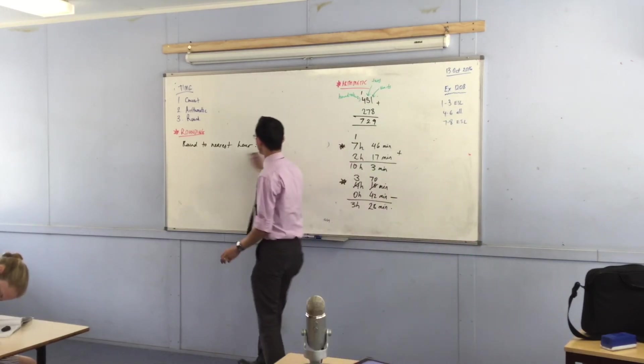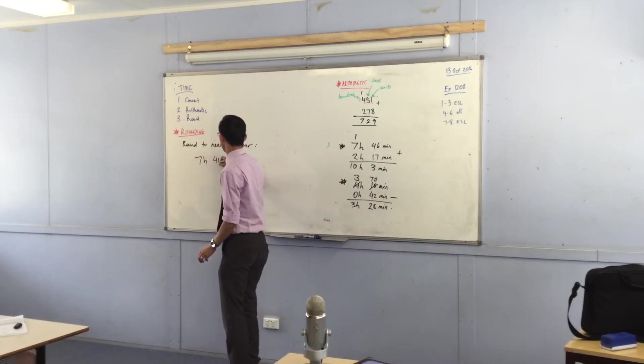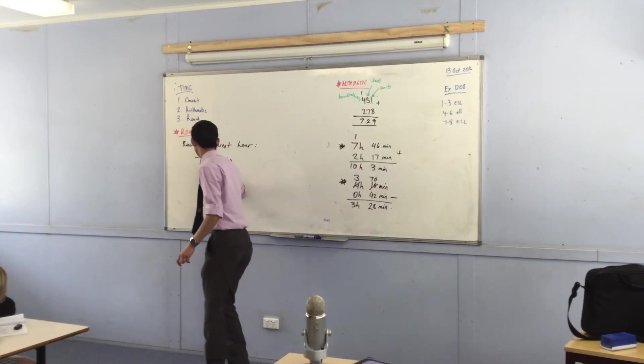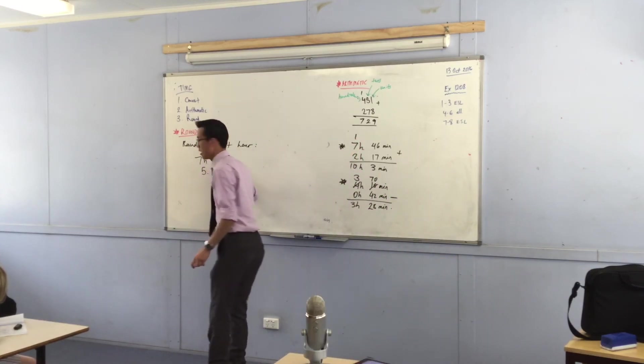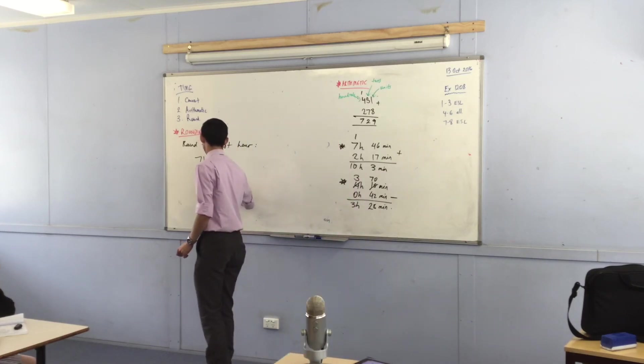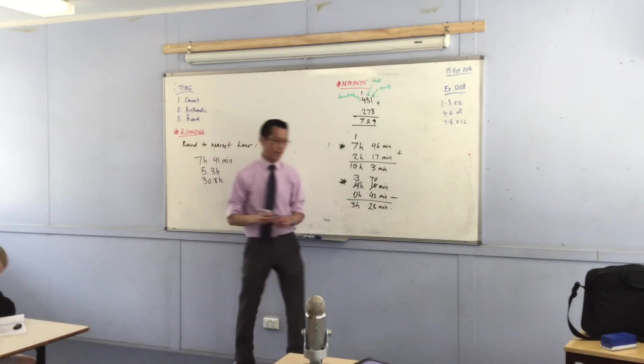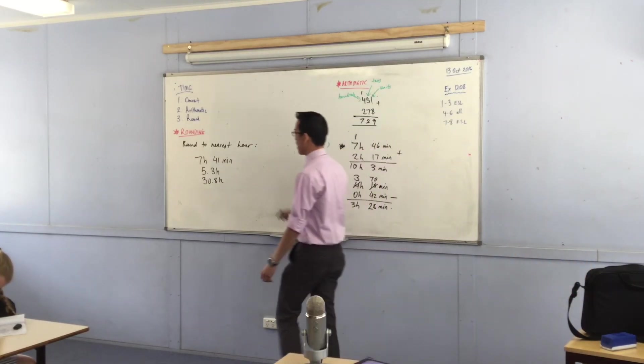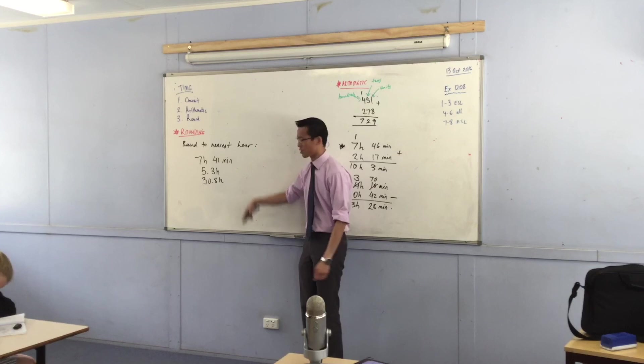Now I'm going to write the three quantities down first, and then we're going to look at them and discuss them briefly. So I've got this one: 7 hours 41 minutes. I've got 5.3 hours. And I've got 30.8 hours.